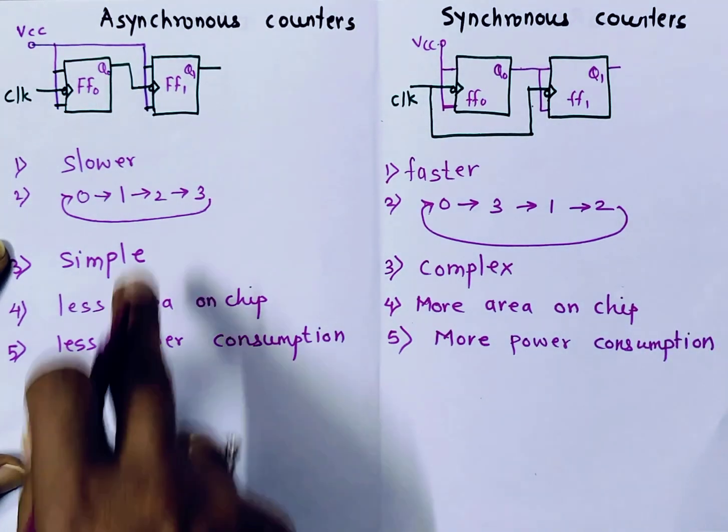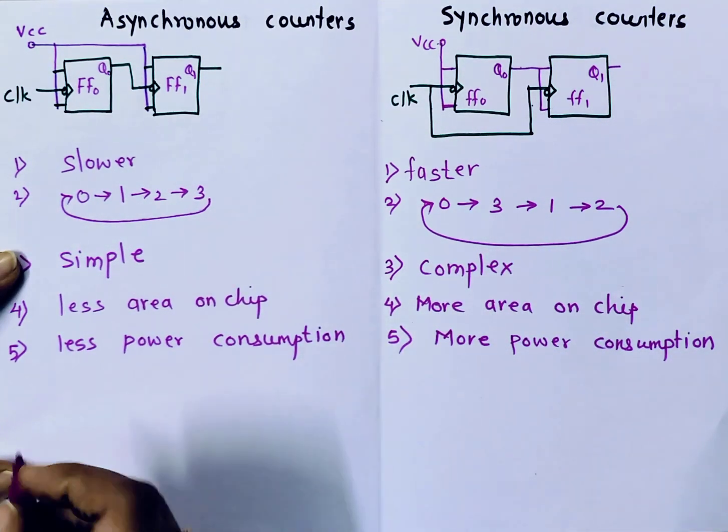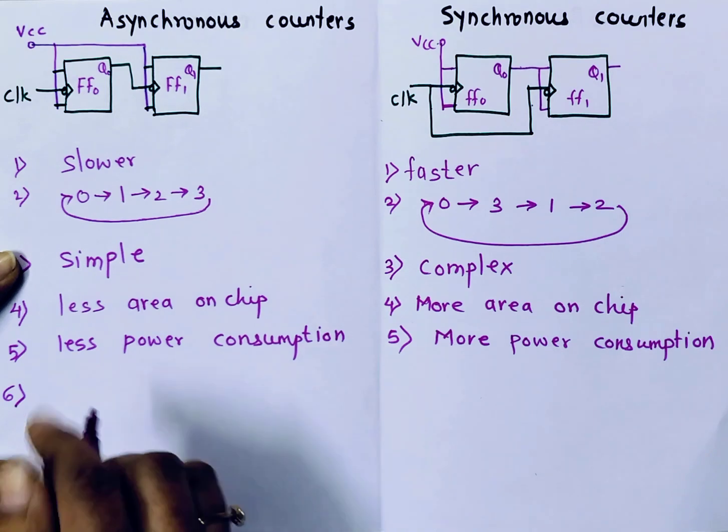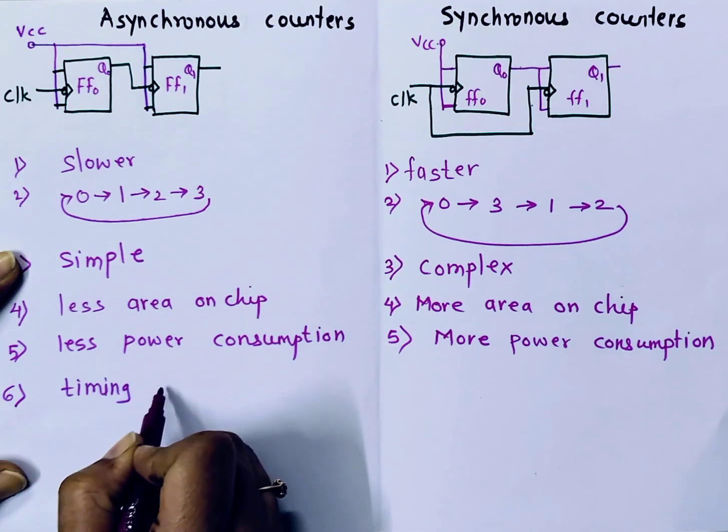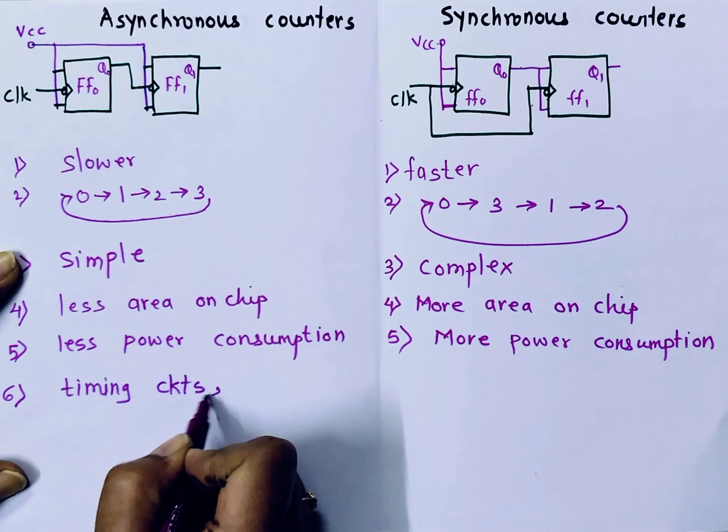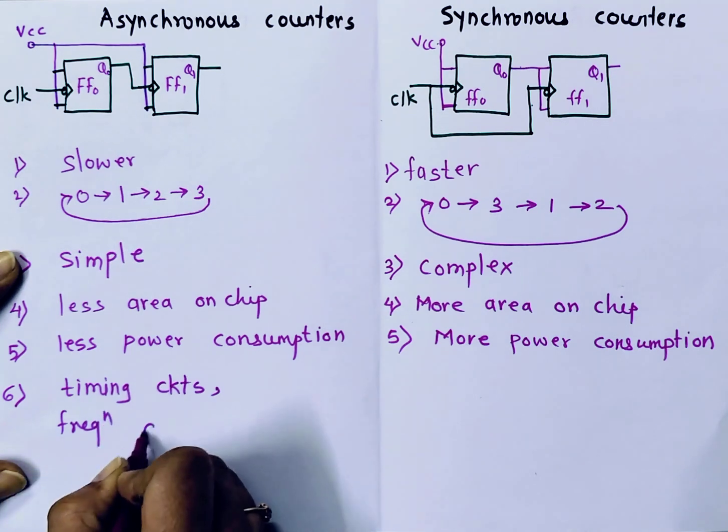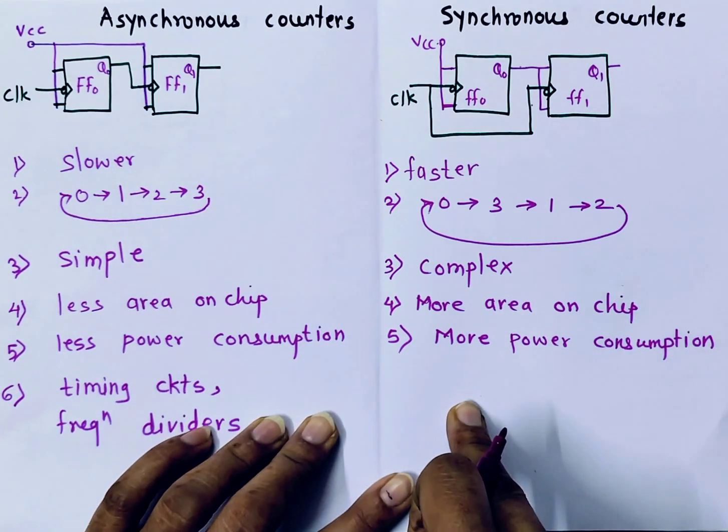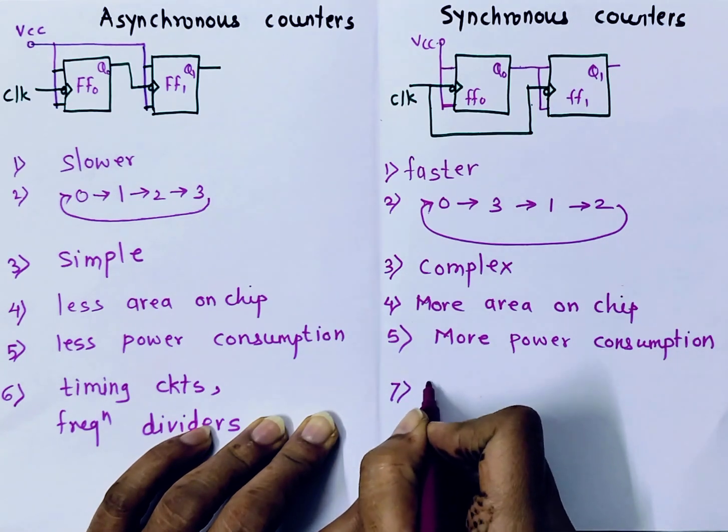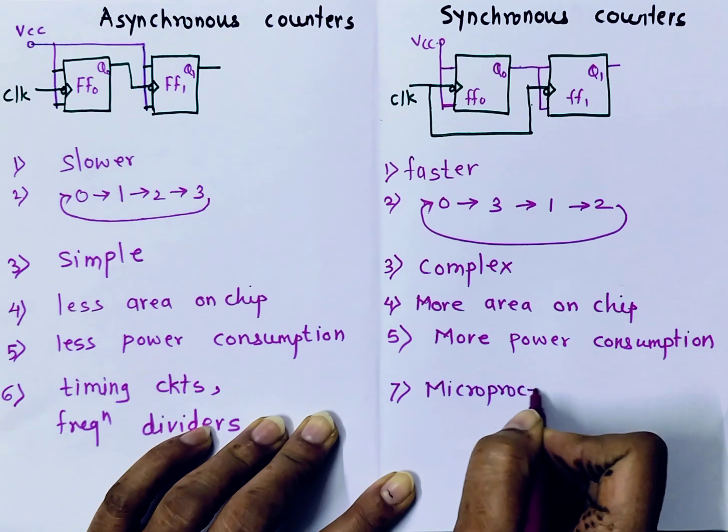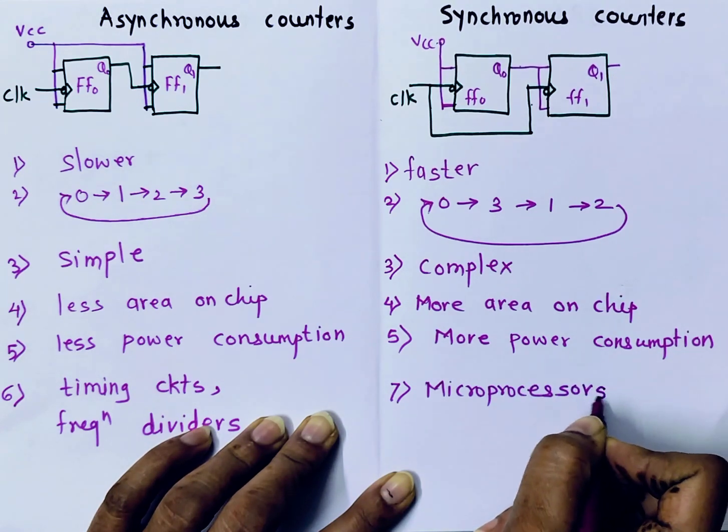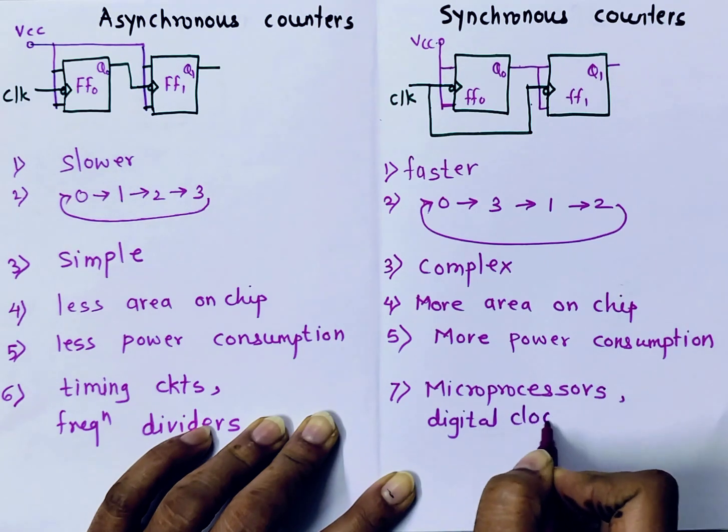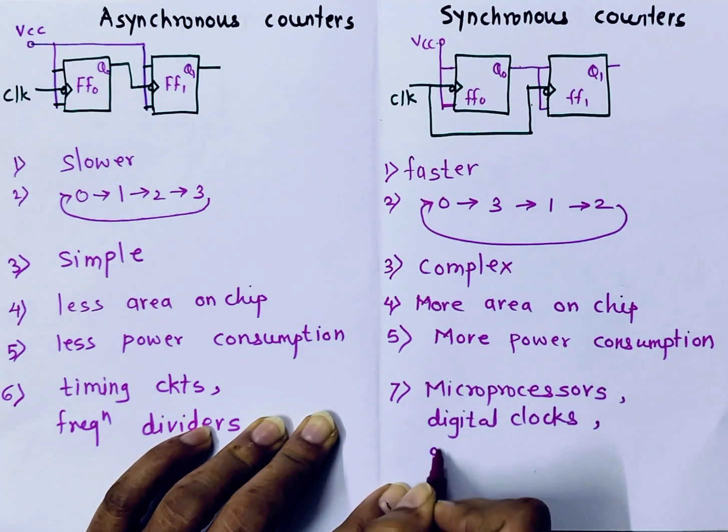Based on these differences, let's see where they are used. Asynchronous counters, they are slower, so they are used in timing circuits or they are also used in frequency dividers. Because of their high speed, Synchronous counters are used in microprocessors, digital clocks, or in data sequencing.